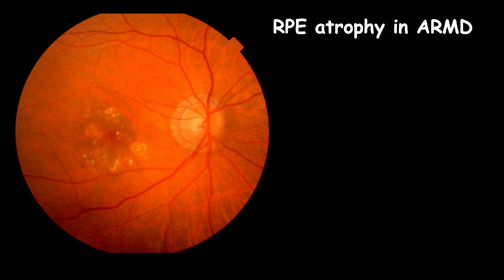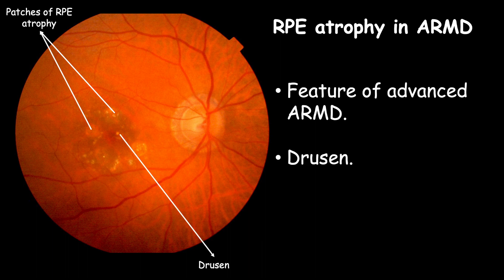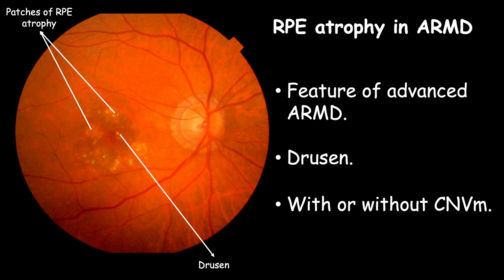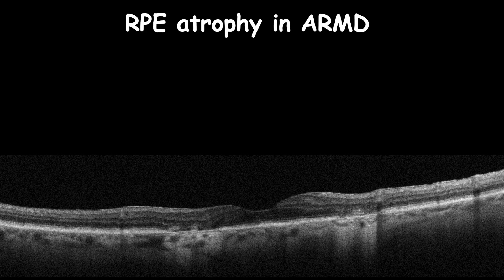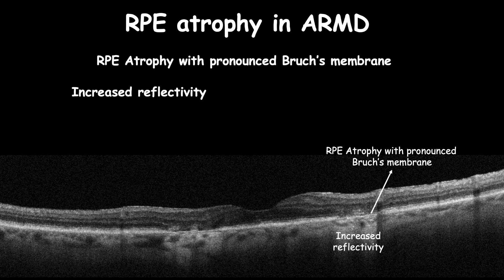In advanced age-related macular degeneration, focal atrophic areas or areas of geographic atrophy present as RPE loss. Usually it presents with drusen and may be associated with or without choroidal neovascular membrane. OCT cross-section shows areas of RPE atrophy featuring absence of the RPE layer with pronounced Bruch's membrane, and light passes through the choroid, increasing its reflectivity.